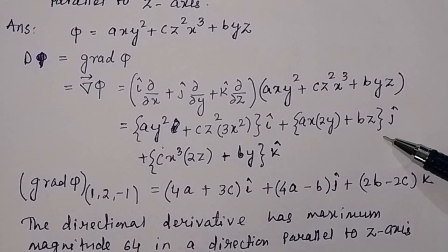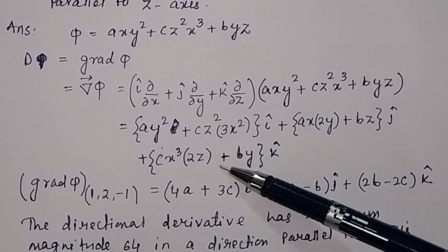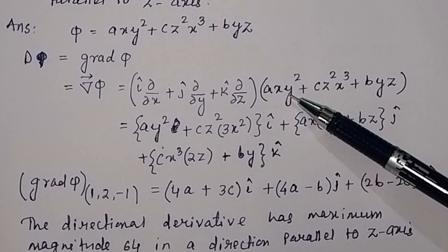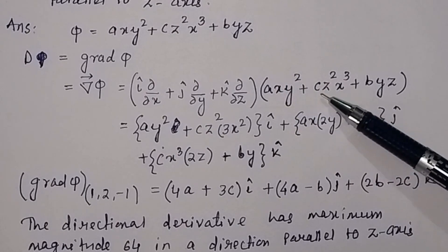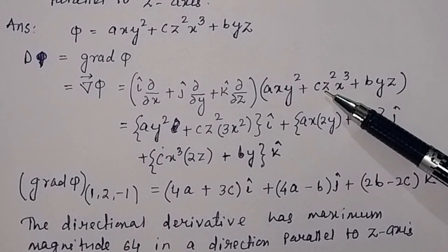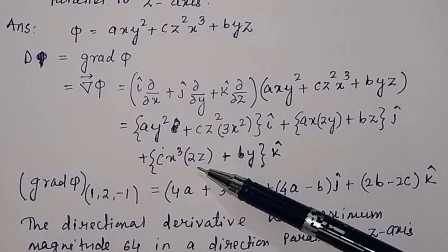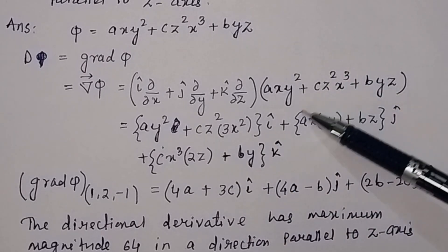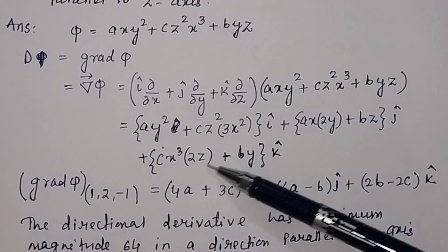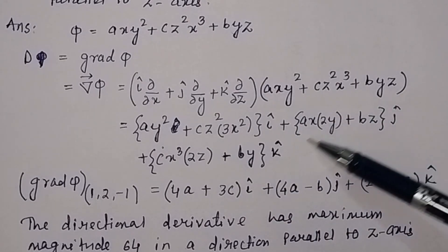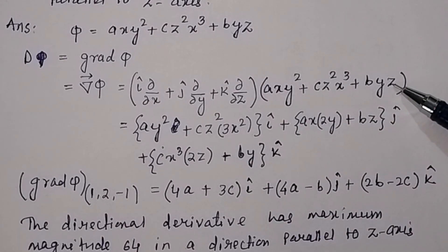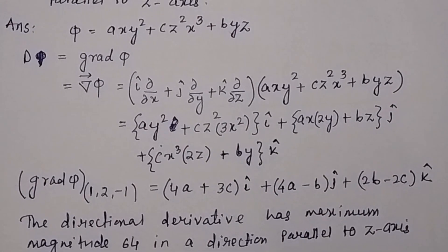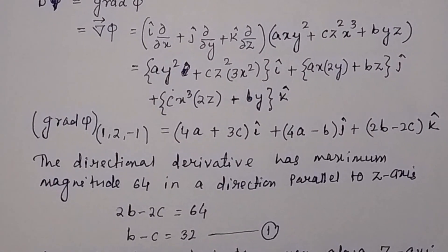So the j-component is (2axy + bz) j-cap. For the k-component, ∂φ/∂z: for the first term axy², there is no z, so it is 0. For the second term, cx³ · 2z. For the third term byz, the partial derivative with respect to z is b·y. So the k-component is (2cx³z + by) k-cap.